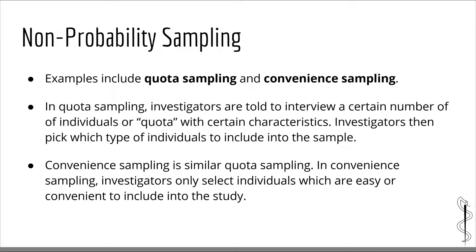Now let's look at some examples of non-probability sampling techniques. Quota sampling is a method in which investigators are told to interview a certain number of individuals with certain characteristics such as age, gender, race, or nationality. However, once these characteristics are met, investigators are free to select individuals as they please. Another type is convenience sampling, in which investigators only select individuals that are easy or convenient to include in the study — similar to what the researchers in example 2 did.